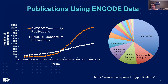NHGRI has identified more than 2,200 community publications — shown by the red-orange curve — and these are from groups without ENCODE funding but who use ENCODE data for their published work. ENCODE consortium members have produced more than 500 publications, going close to a thousand, shown by the white curve. This is since the program started.